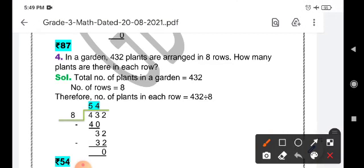Now come on, question 4. In a garden, 432 plants are arranged in 8 rows. How many plants are there in each row? This is the question. Now you have to understand the question. The question tells us that you are going to divide because we have to divide 432 plants in 8 rows—that is equal dividing, equal sharing.